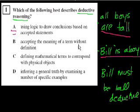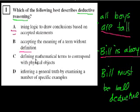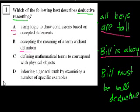Answer B says: accepting the meaning of a term without definition. I don't even know how one can do that — how do you accept the meaning of something without it being defined? Answer C: defining mathematical terms to correspond with physical objects. That's not really anything related to deductive reasoning. Answer D: inferring a general truth by examining a number of specific examples. This is actually more of inductive reasoning. So they want deductive reasoning, so I'm going to go with A — use logic to draw conclusions based on accepted statements.